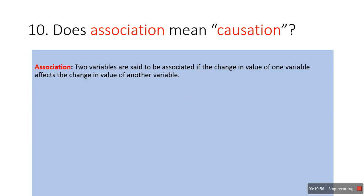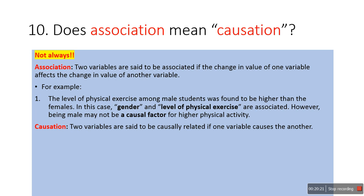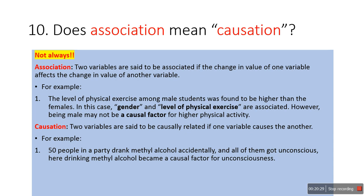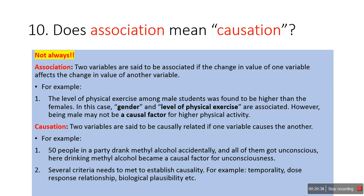The last question is: does association always mean causation? Two variables are said to be associated if a change in one variable affects the change in another. Not always does association mean causation. For example, the level of physical exercise among male students was found to be higher than female — gender and level of physical exercise are associated, but being male may not be a causal factor. Two variables are causally related if one causes the other — for example, 50 people accidentally drank methyl alcohol and all became unconscious. Several criteria must be met to establish causality, such as temporality, dose-response relationship, and biological plausibility. You can refer to Hill's criteria of causation and Rothman's causal pie model for further detail.